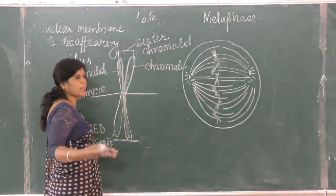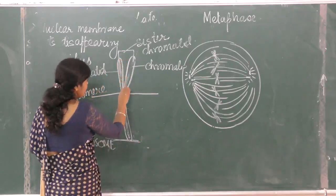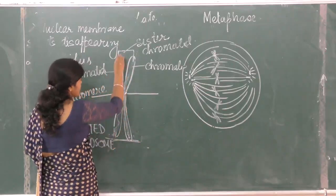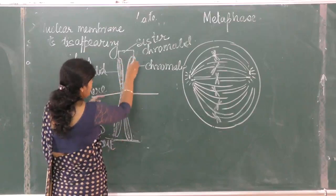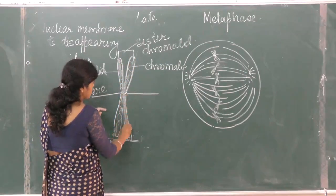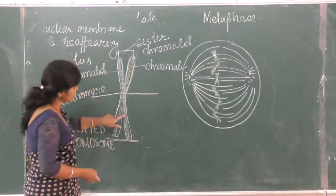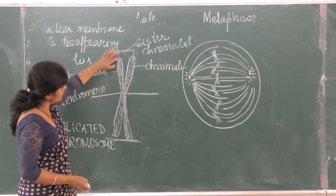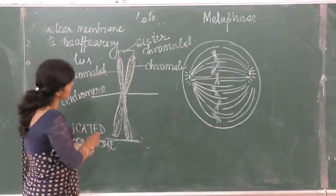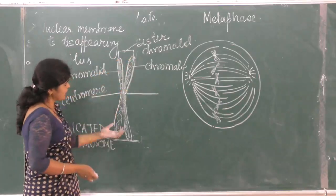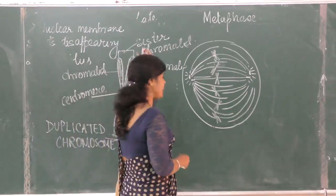This one DNA is making one chromatid, and the other DNA is making the other chromatid, still attached at the centromere. That is why we call this chromosome a duplicated chromosome.